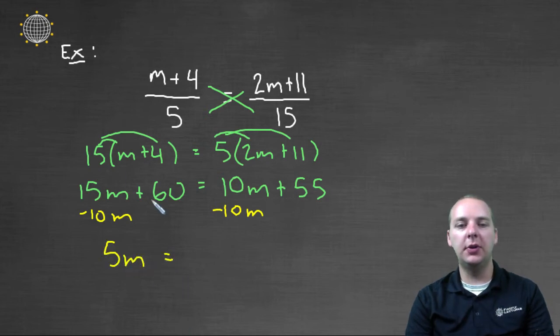And let's also subtract sixty to the right. So minus sixty on the left, and minus sixty on the right. So these will cancel, just like those canceled. And fifty-five minus sixty would leave us with negative five.